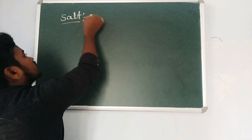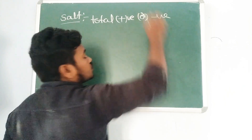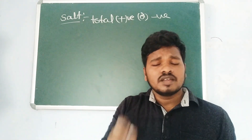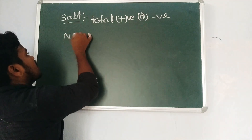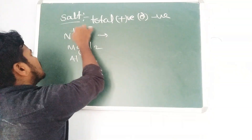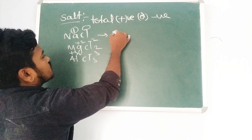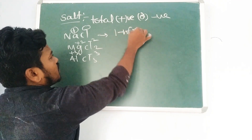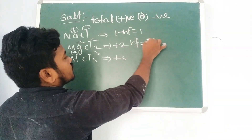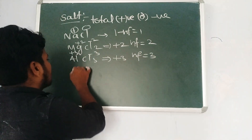For salts, we count the total positive charge or total negative charge — take either one, not both together. For NaCl: Na⁺ Cl⁻ — one positive charge, so n-factor is 1. For MgCl₂: Mg²⁺ — positive charge is +2, so n-factor is 2. For AlCl₃: Al³⁺ — positive charge is +3, so n-factor is 3.